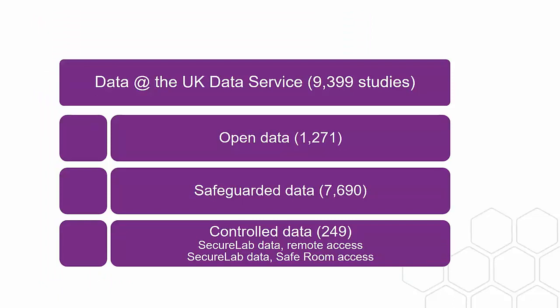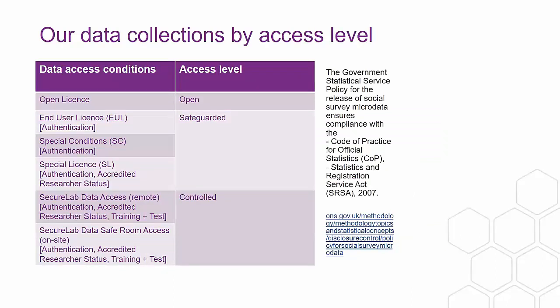To give you an idea of scope, the UK Data Service holds almost nine and a half thousand studies. The majority — 7,690 — are safeguarded data, meaning after an initial registration process you can access and download the data to your desktop for analysis. We also have open data and controlled or secure access data. The main type of controlled access is remotely accessible secure lab data, with a very small number only accessible in our safe room.